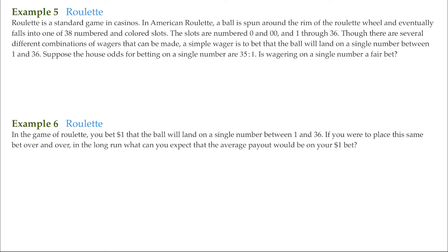So for this first example here about roulette, roulette is a standard game in casinos. It's very popular. In American roulette, a ball is spun around the rim of the roulette wheel and eventually falls into one of 38 numbered and colored slots.